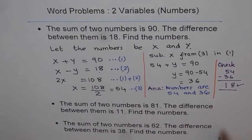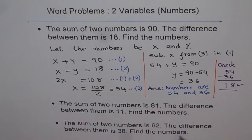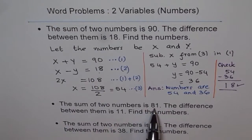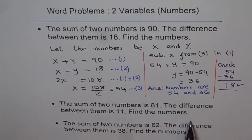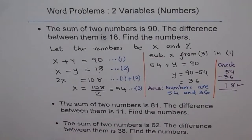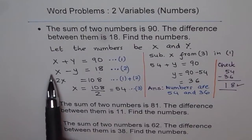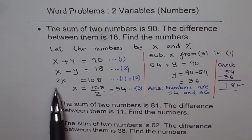I have given two practice problems for you, which are exactly the same type as what we did. First: the sum of two numbers is 81, the difference between them is 11 — find the numbers. Follow the steps: write down the let statement, write down your equations, then find a strategy to solve them.